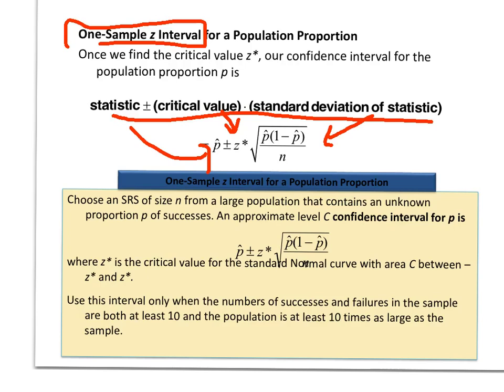Remember here that we can only use this if both the successes and failures are at least 10. n times p has to be greater than or equal to 10, and n times 1 minus p has to be greater than or equal to 10. And the rule 10 applies. Our sample size times 10 - we have to show that the population is bigger than that. Two very big conditions to check before we can use a one-sample z interval.